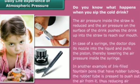In a syringe, the doctor dips its nozzle into the liquid and pulls the piston, thereby lowering the air pressure inside the syringe. In an ink-filled fountain pen with a rubber tube, the rubber tube is pressed to push out the air from it, thus reducing air pressure inside and drawing in ink.